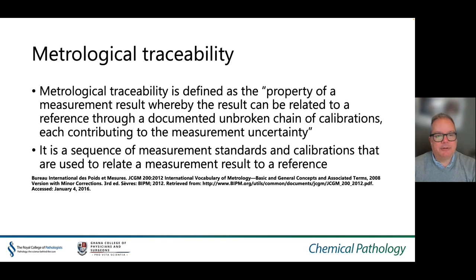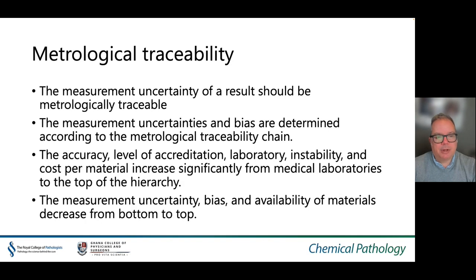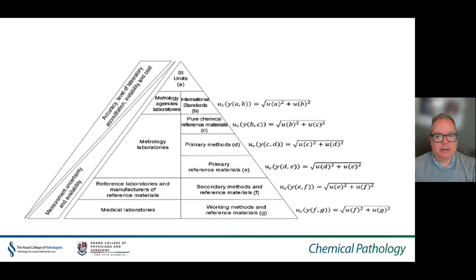Metrological traceability is defined as the property of a measurement result whereby the result can be related to a reference via a documented unbroken chain of calibrations, each contributing to the measurement uncertainty. It is the sequence of measurement standards and calibrations used to relate a measurement result to a reference. The measurement uncertainty results should therefore be metrologically traceable. The accuracy, level of accreditation, laboratory instability, and cost per material increase significantly from medical laboratories to the top of the hierarchy, while measurement uncertainty, bias, and available materials decrease from bottom to top, as illustrated in the diagram.